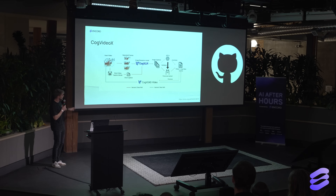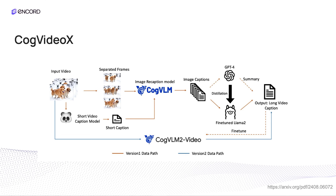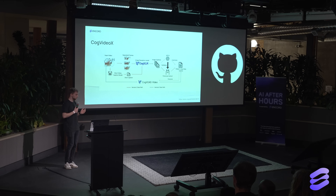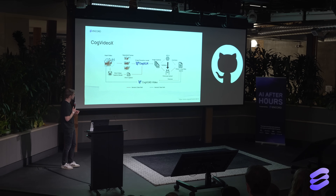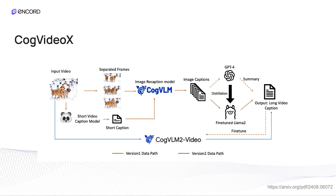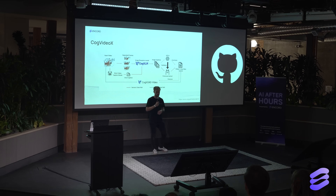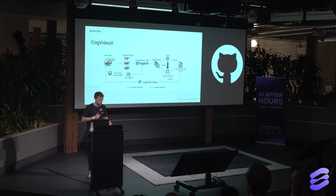The second example is from a video generative model. They wanted to train a model where you give it text and it generates a video. To do that, you need lots of videos with very high-quality captions. There aren't enough high-quality captions on the internet, so they built a big pipeline: take videos, split them into frames, do image captioning, then take all the frame captions and run another summarization model — resulting in a final high-quality caption. Multiple models stitched together to reach quality.